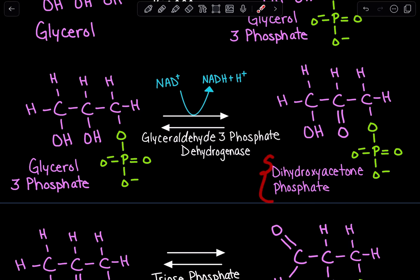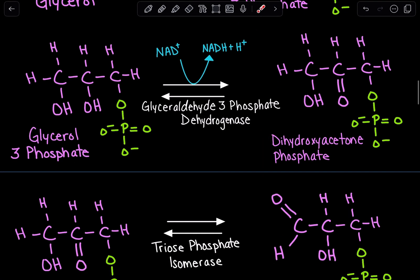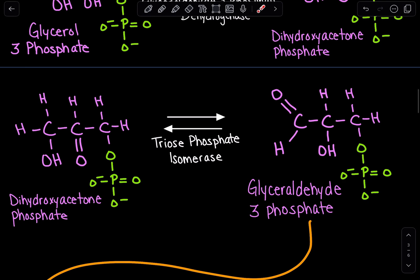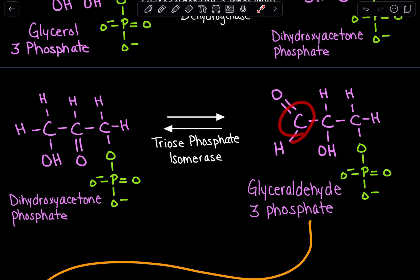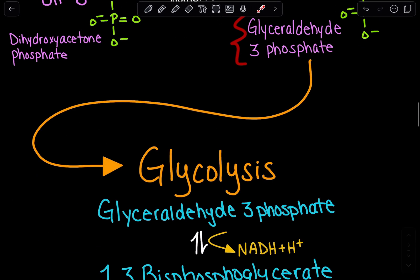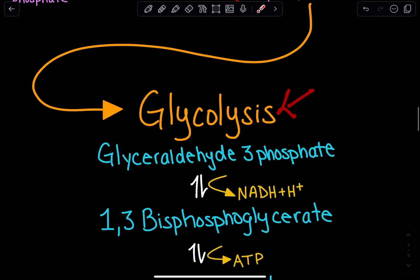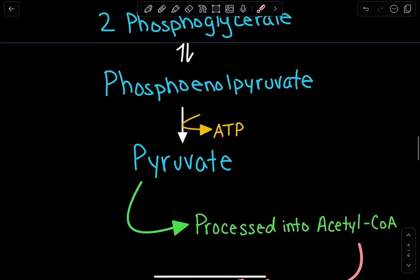In glycolysis, we have dihydroxyacetone phosphate, and it is converted into glyceraldehyde-3-phosphate via an isomerization reaction — we take that carbonyl and hydroxyl and switch their positions so that the carbonyl ends up on the terminal carbon to get glyceraldehyde-3-phosphate, because glyceraldehyde-3-phosphate can go further into glycolysis and be broken down into pyruvate.